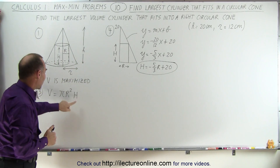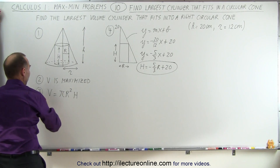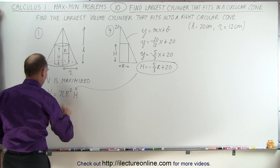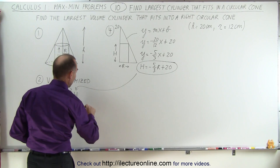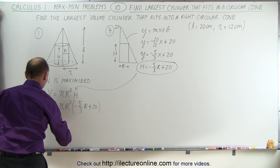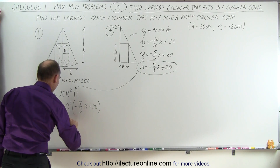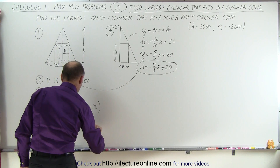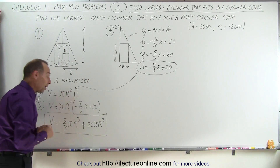Once we have that constraint, we plug it into the volume equation to eliminate one of the variables. Now we have volume equal to pi R squared times, instead of H, minus 5 over 3 R plus 20. Multiplying this out, we get volume equals minus 5 over 3 pi R cubed plus 20 pi R squared — an equation for the volume in terms of only one unknown.